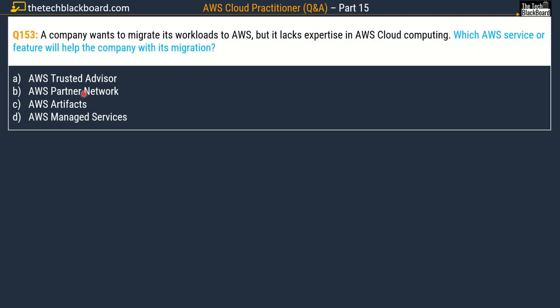Now let's look at question number 153. A company wants to migrate its workloads to AWS but lacks expertise in AWS cloud computing. Which AWS service or feature will help the company with its migration? Options are: option A, AWS Trusted Advisor; option B, AWS Partner Network; option C, AWS Artifacts; and option D, AWS Managed Services. While researching this question, I had a confusion between option B, AWS Partner Network, and option D, AWS Managed Services. I have picked option D, AWS Managed Services, as the correct answer, and I will tell you why.